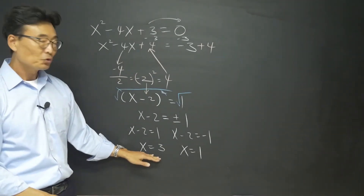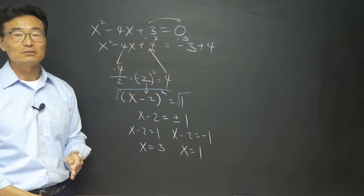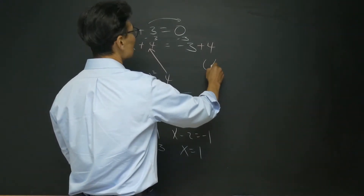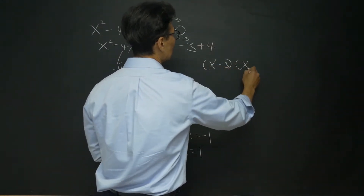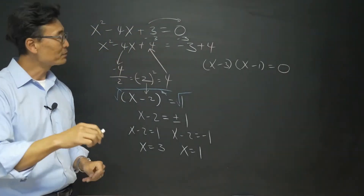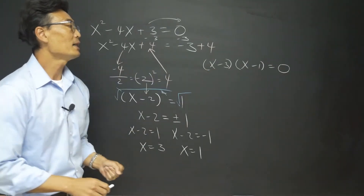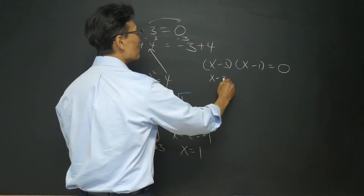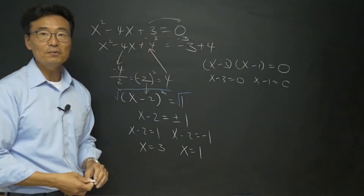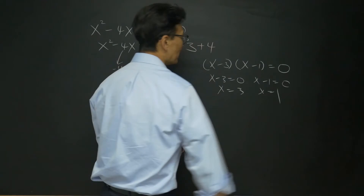Let me show you that you will get the same answer had we used the factor form. If we factor the original equation, we get x minus 3 times x minus 1 equals 0. As I showed in chapter 3, section 4, this means x minus 3 equals 0 and x minus 1 equals 0, giving us x equals 3 and x equals 1.